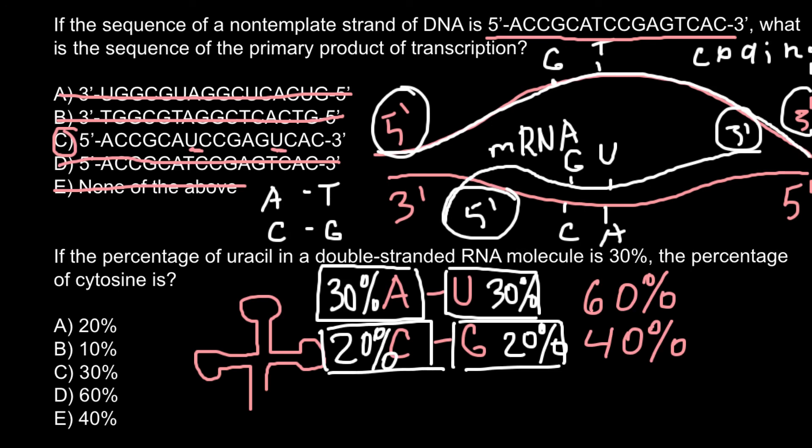So the answer to our question — how much cytosine makes up in this RNA molecule — is 20%, which is answer A. I hope you solved this problem correctly. This is very easy to solve. That is all for today. Thank you for your attention. Please subscribe for my new videos that I post almost every day. Thumbs up if you liked this video, write your comments and questions if you have any. See you in the next video. Goodbye.